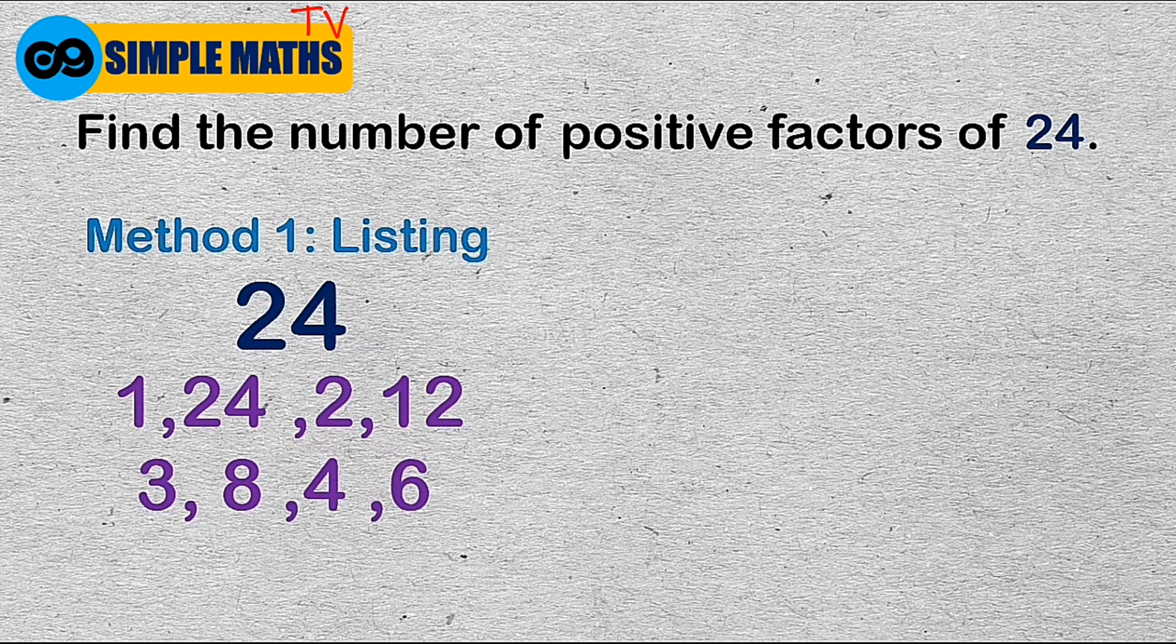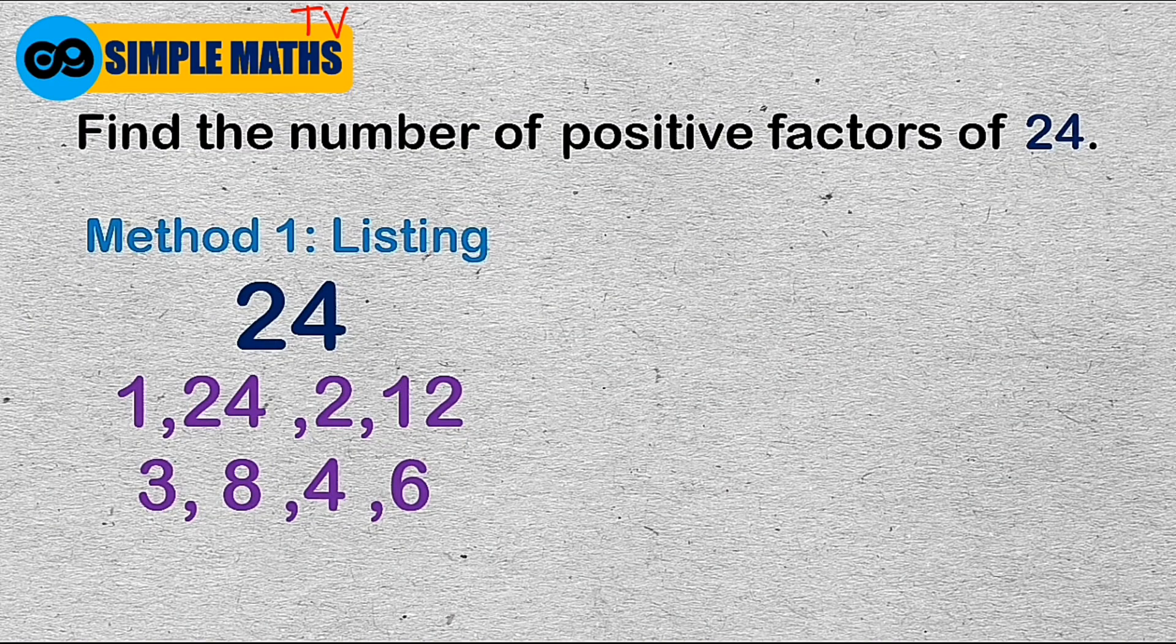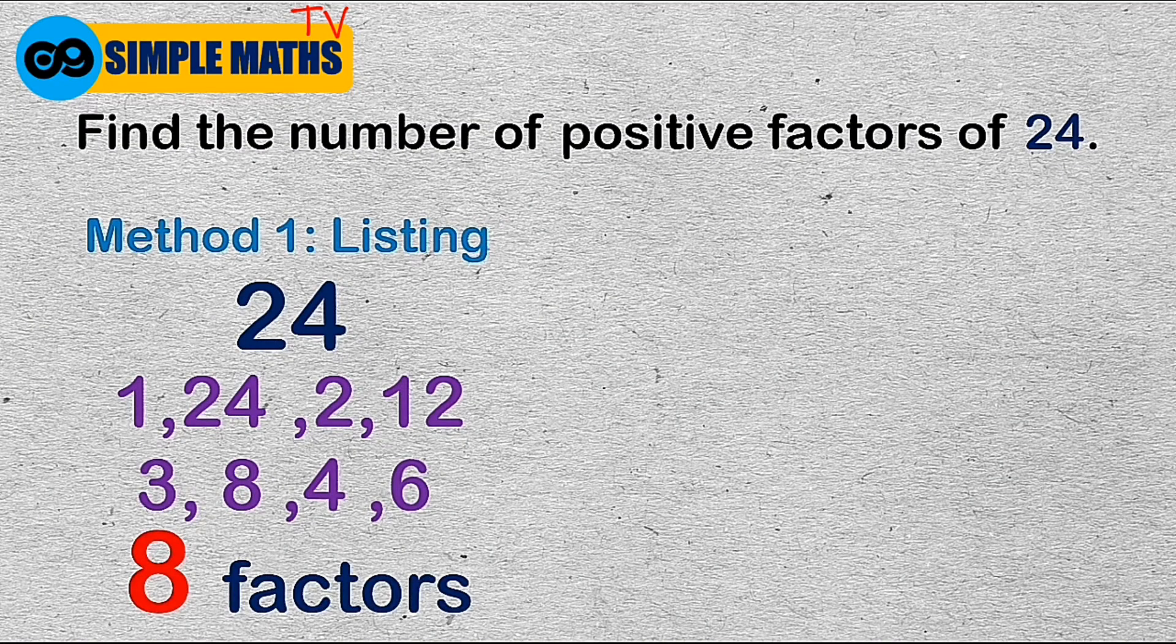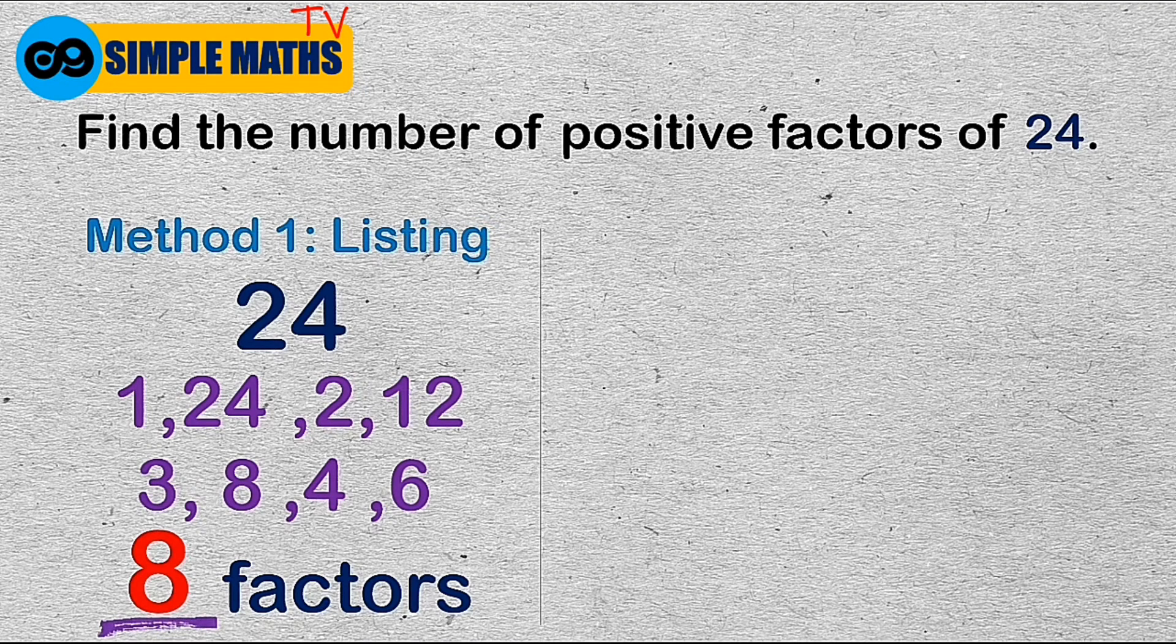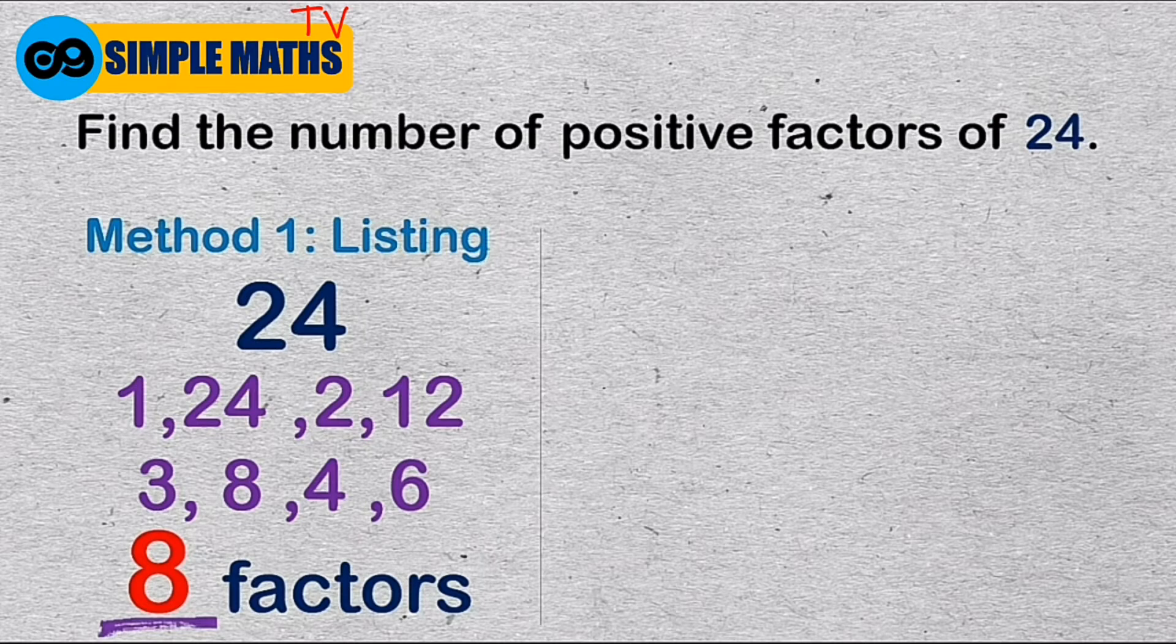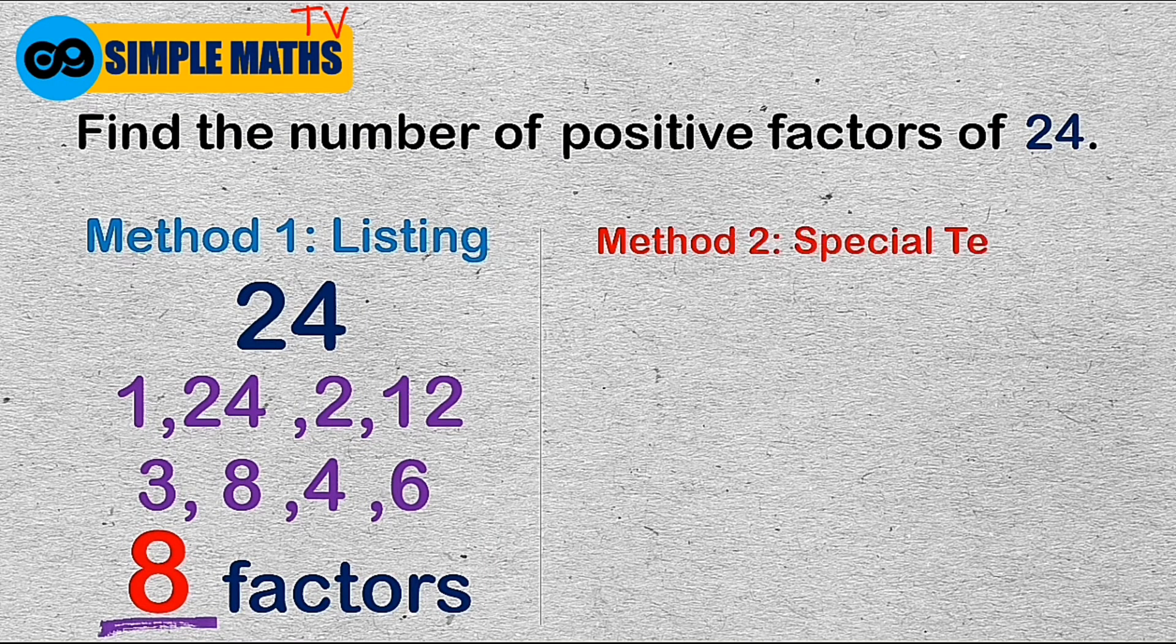We can see by the listing method that there are 8 positive factors of 24. Of course, the listing method is not a practical way when working with bigger numbers like 4,224. So let's take a look at this special technique that will help us save time.